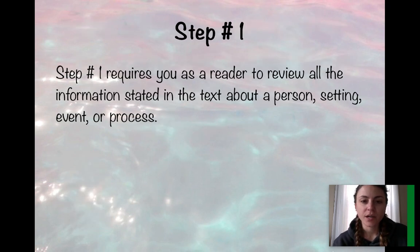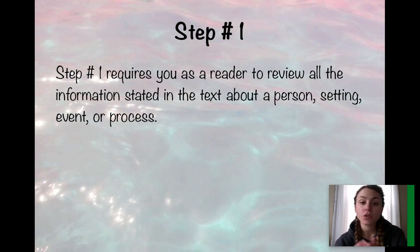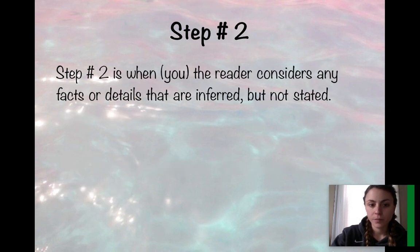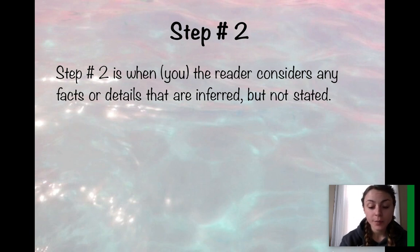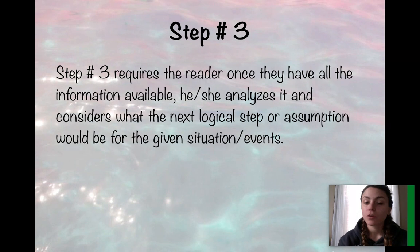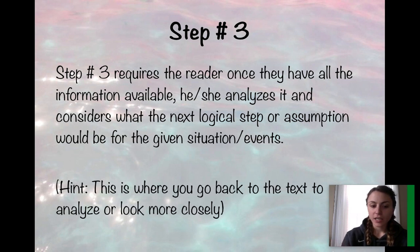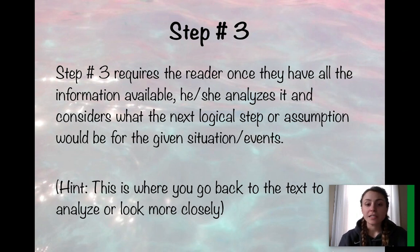Step one requires you as a reader to review all the information stated in the text about a person, setting, event, or process. Hint: your thoughtful annotations can be of great assistance when you are done with that first or second read. Step two is when you, the reader, consider any facts or details that are inferred but not stated. Step three requires the reader, once they have all the information available, to analyze it — look more closely and consider what the next logical step or assumption would be given the situations or events. You can go back to the text to analyze more closely, or review the annotations you previously made.